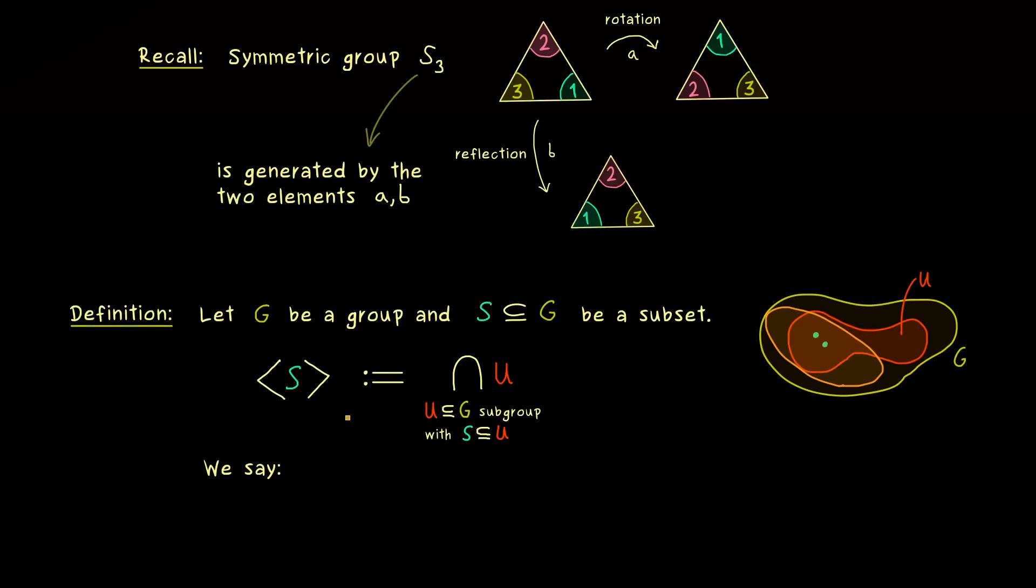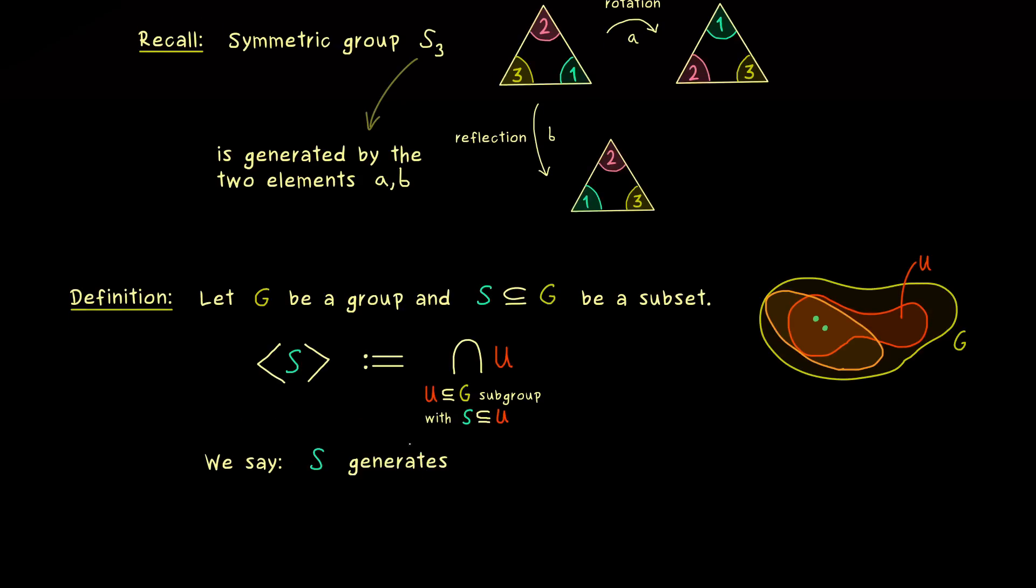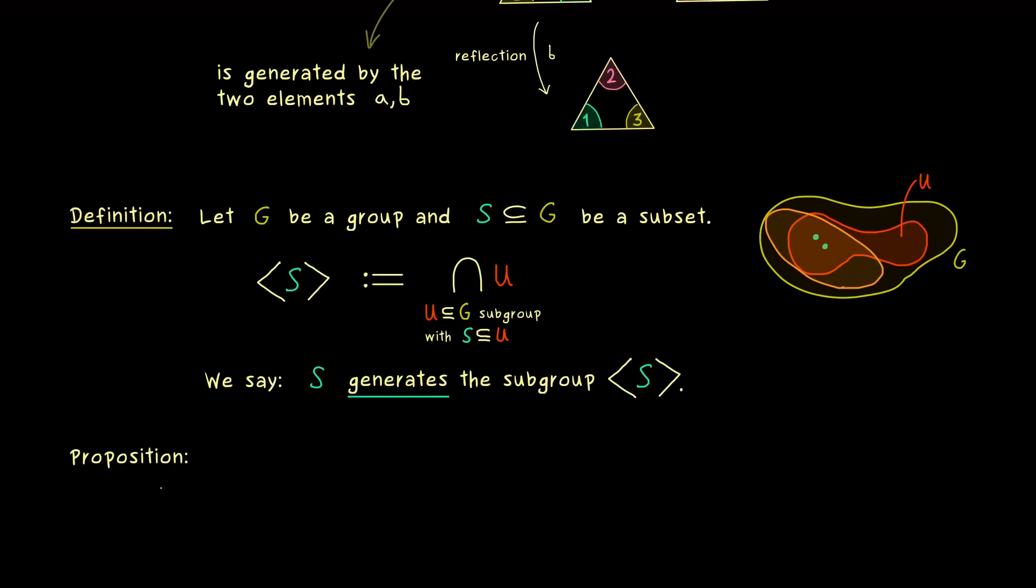But first let's fix the manner of speaking. In an active form we say S generates this new subgroup. Hence this generation process we have already used above is explained. And with that we might have an efficient way to define some particular groups. But before we talk about examples I would say let's clear up a gap in this definition.